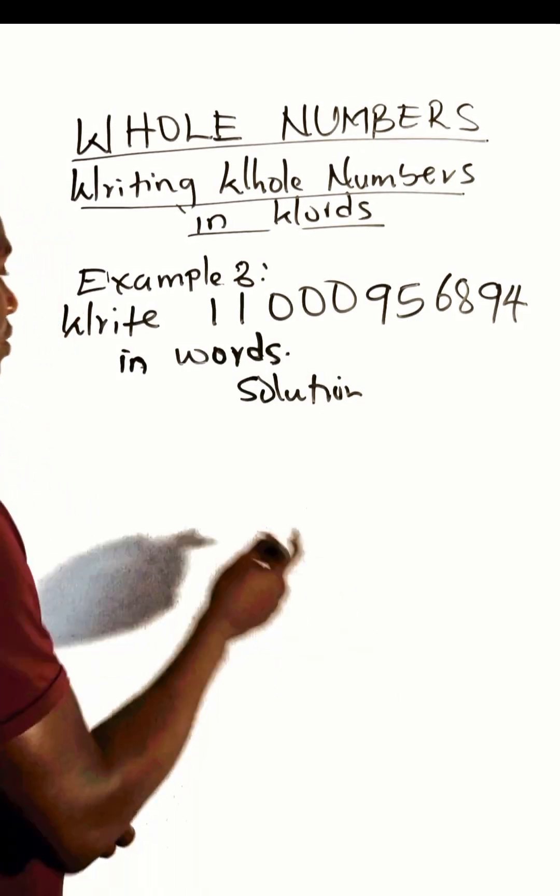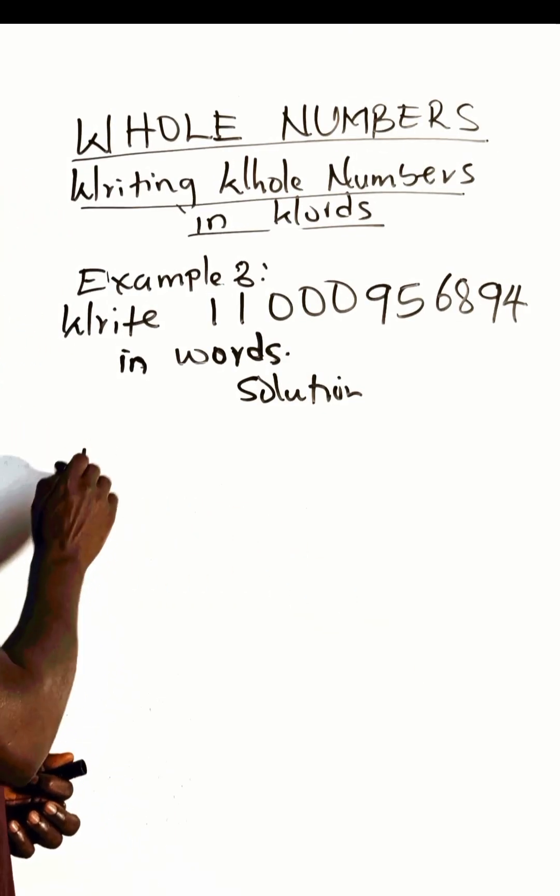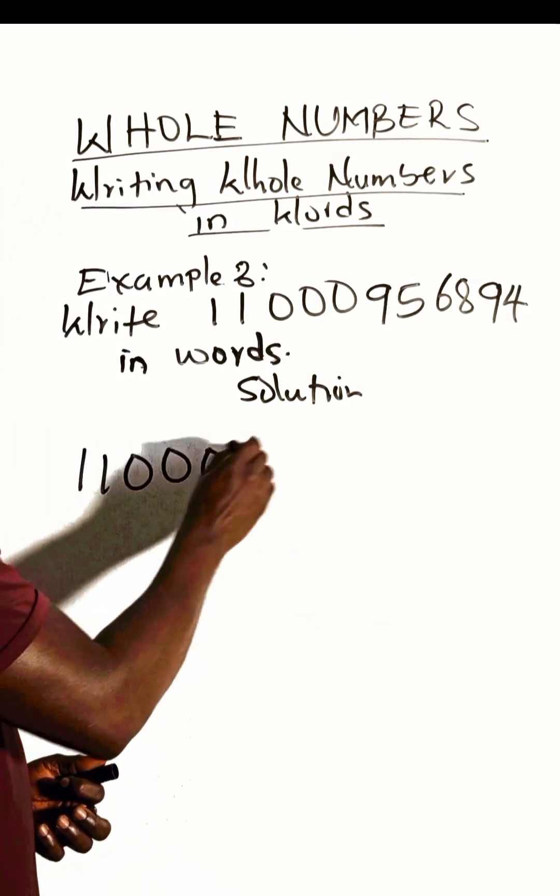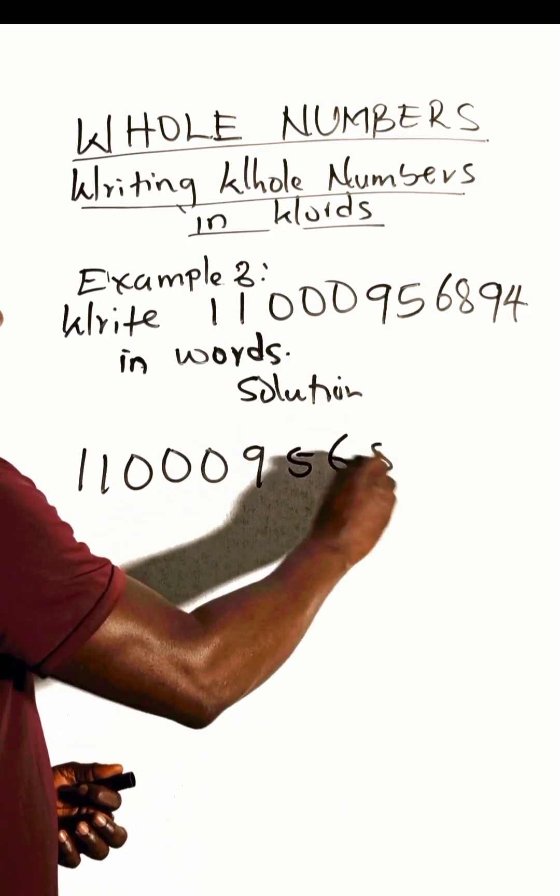The first step is to write out all the digits: one, one, zero, zero, zero, nine, five, six, eight, nine, four.